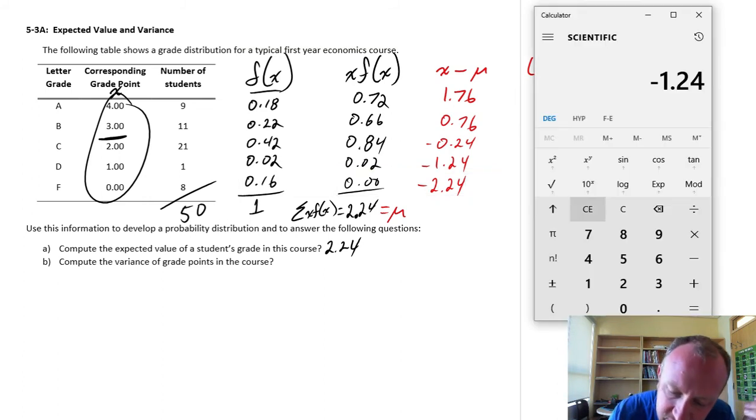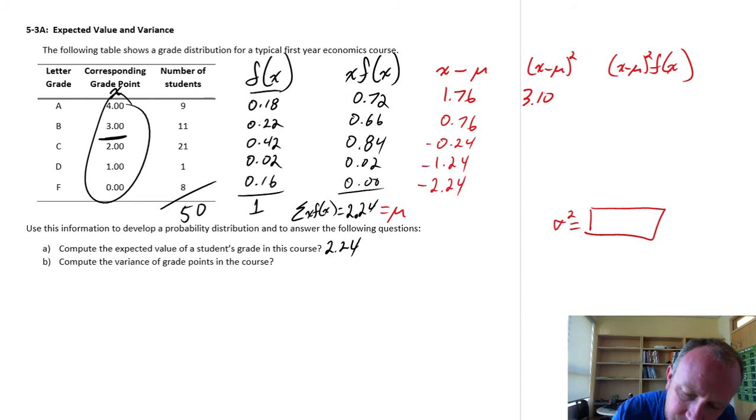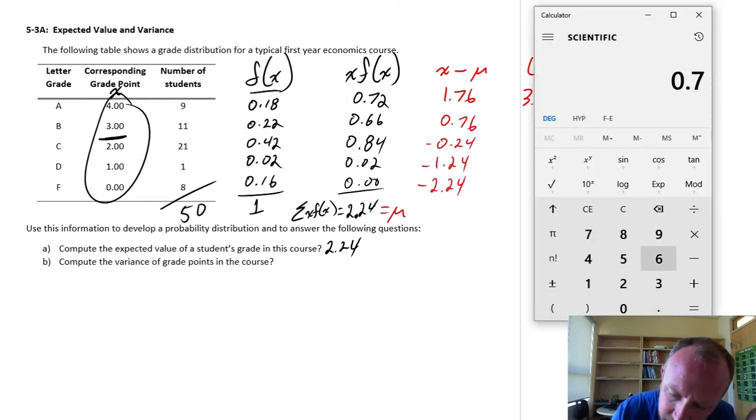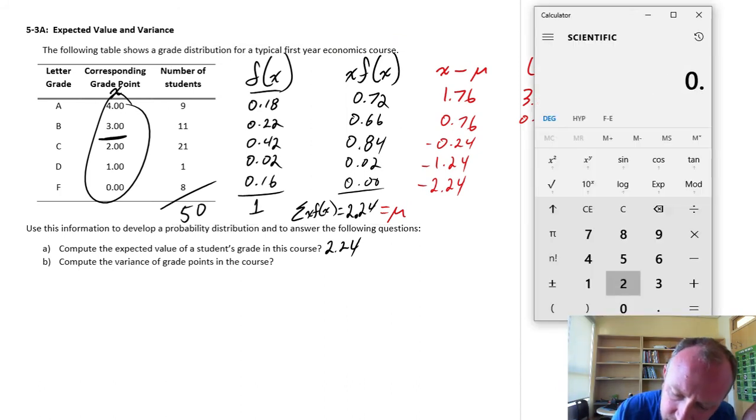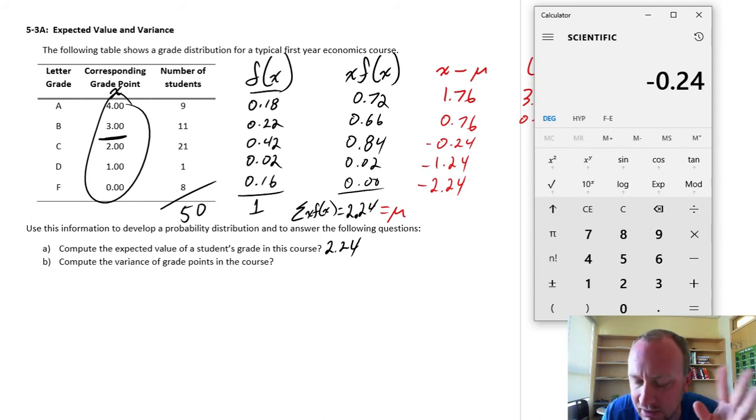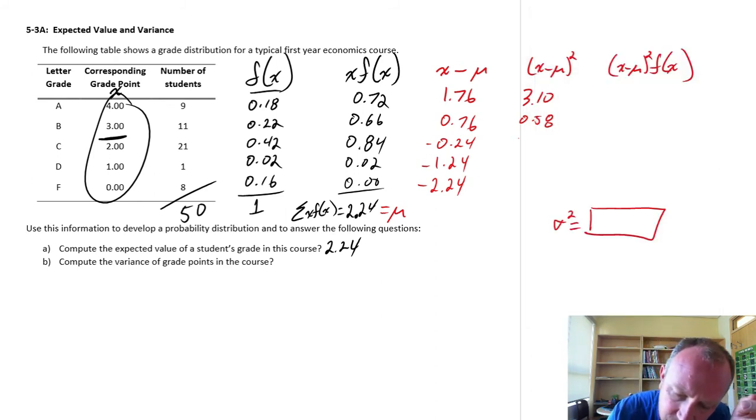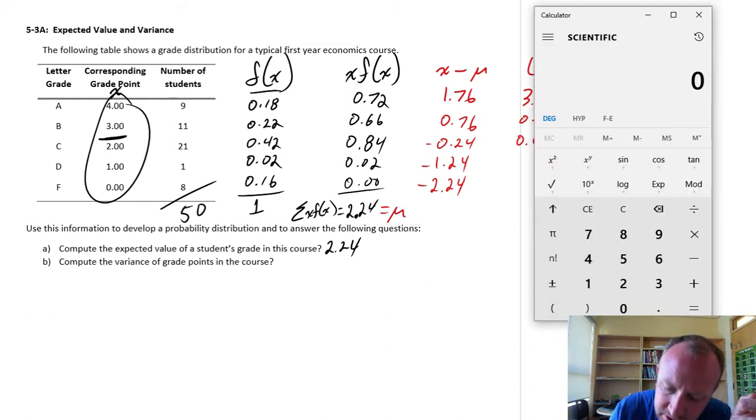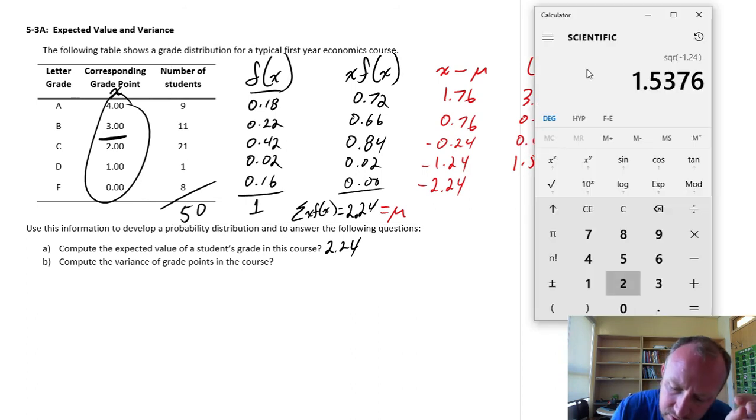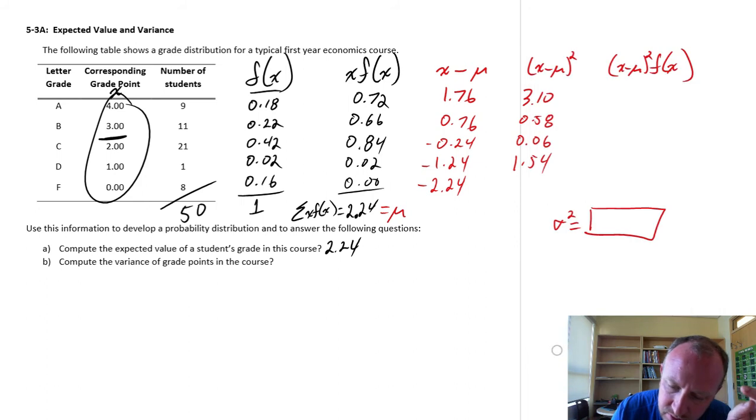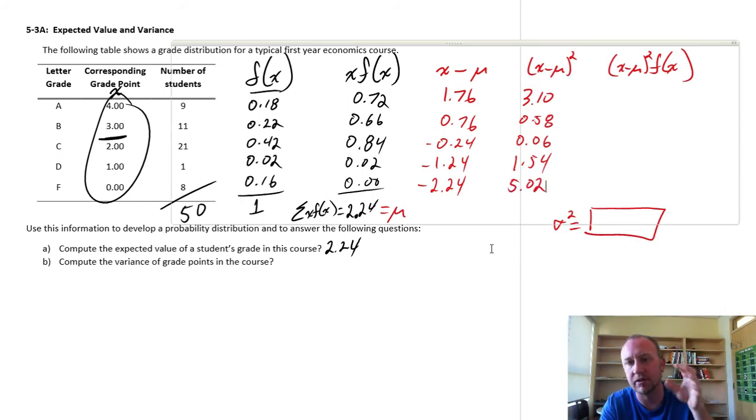Now for the next column, we just have to square all of those. So 1.76 squared, let me round this 3.1. Now the next one is 0.76 squared, 0.58. 0.24, this is negative, but it doesn't matter if we put the negative in because we're squaring it anyways, so we can avoid that key press, 0.06. The next one is 1.24 squared, 1.54. And finally, 2.24 squared, 5.02. So now we have all of those differences squared.